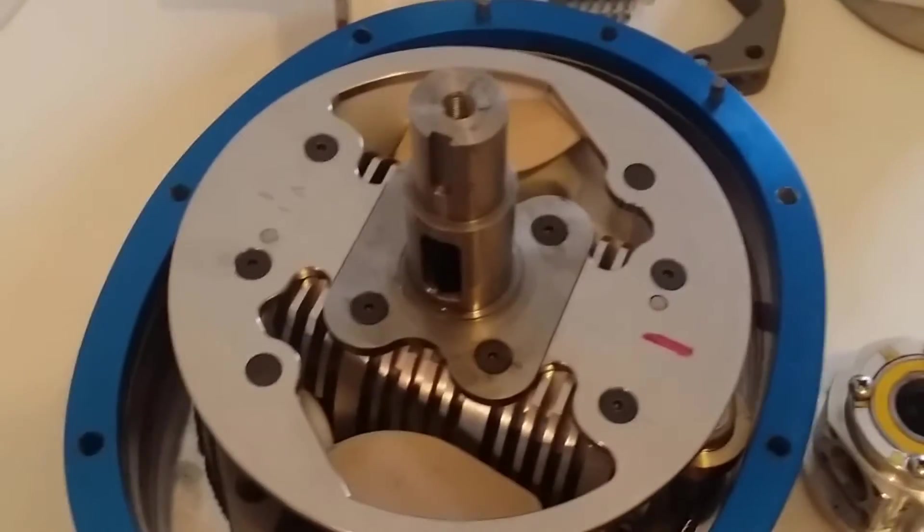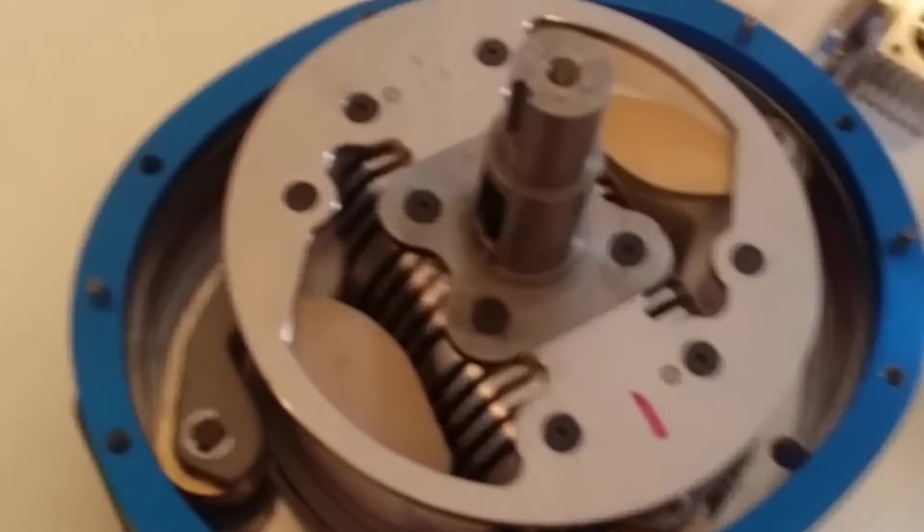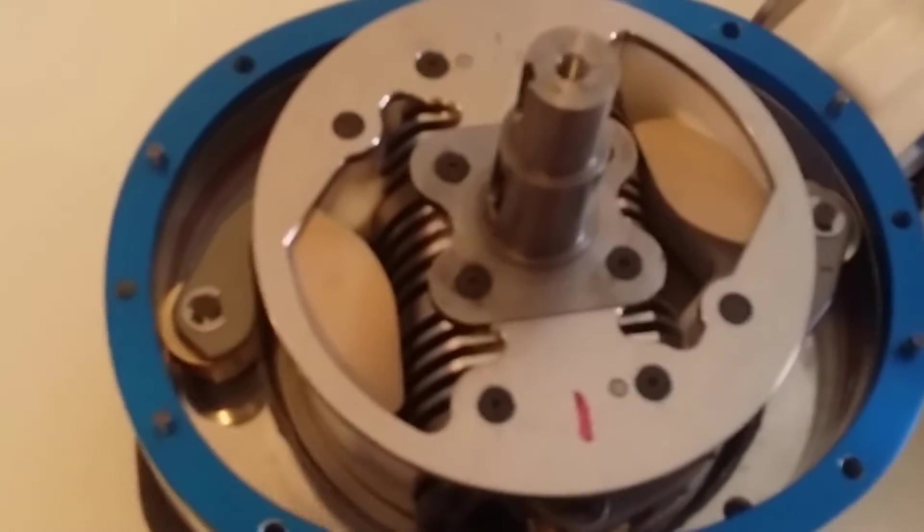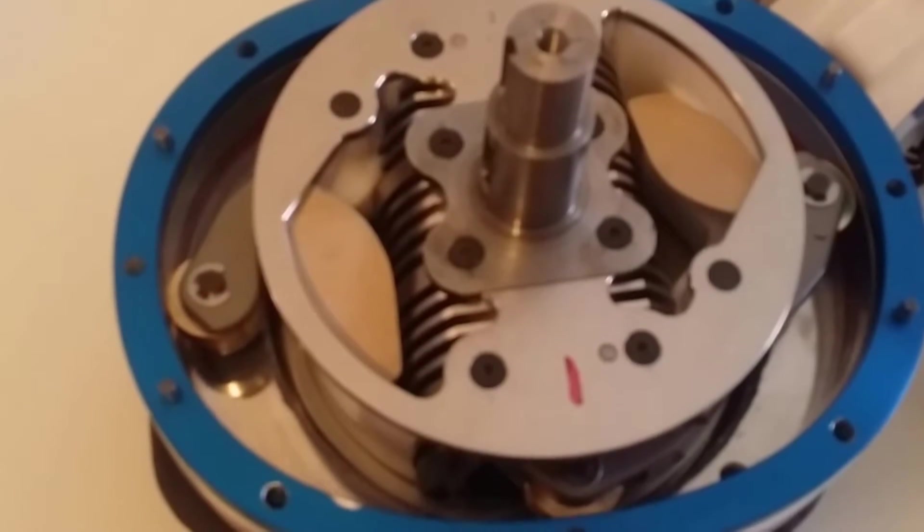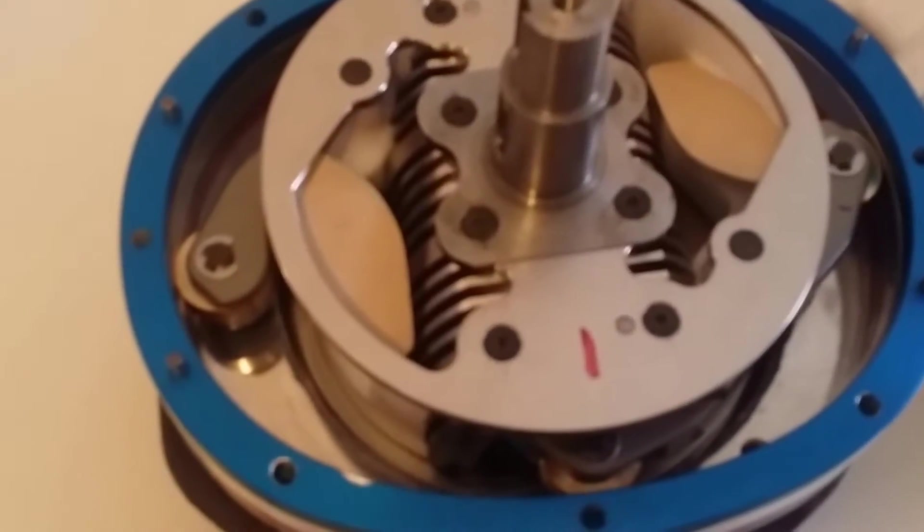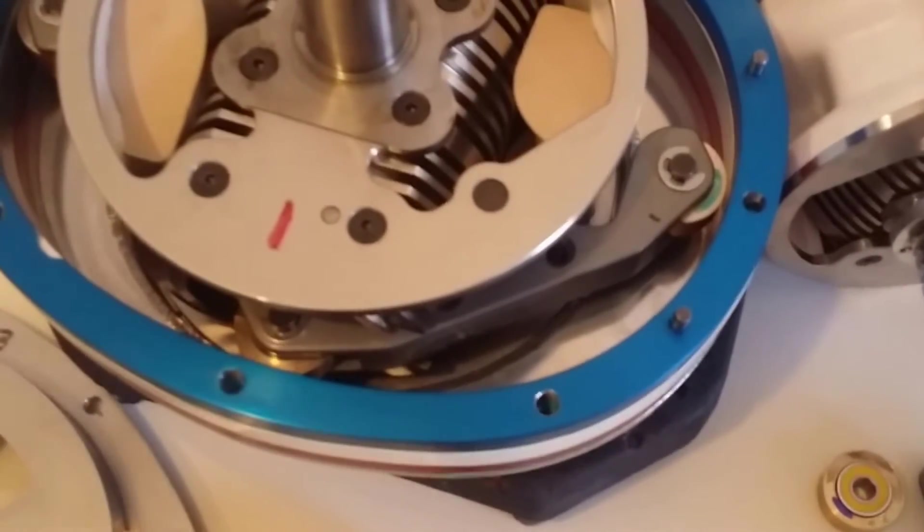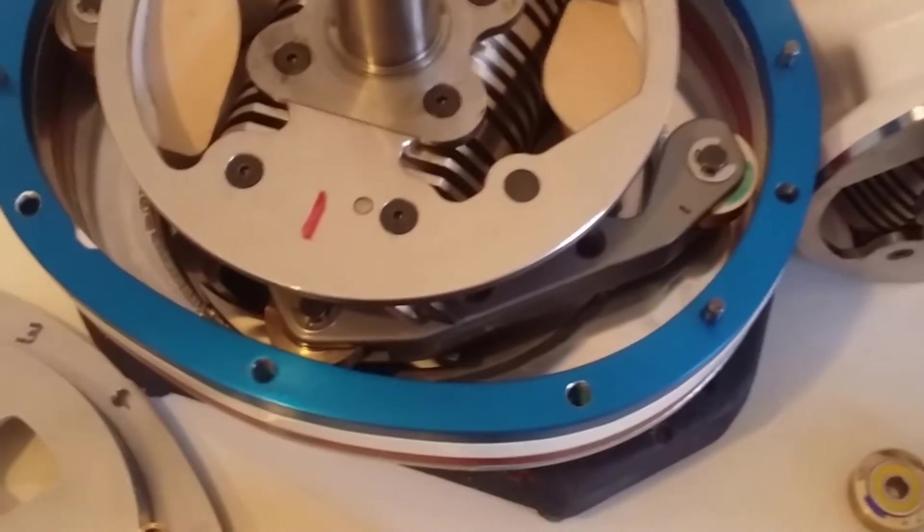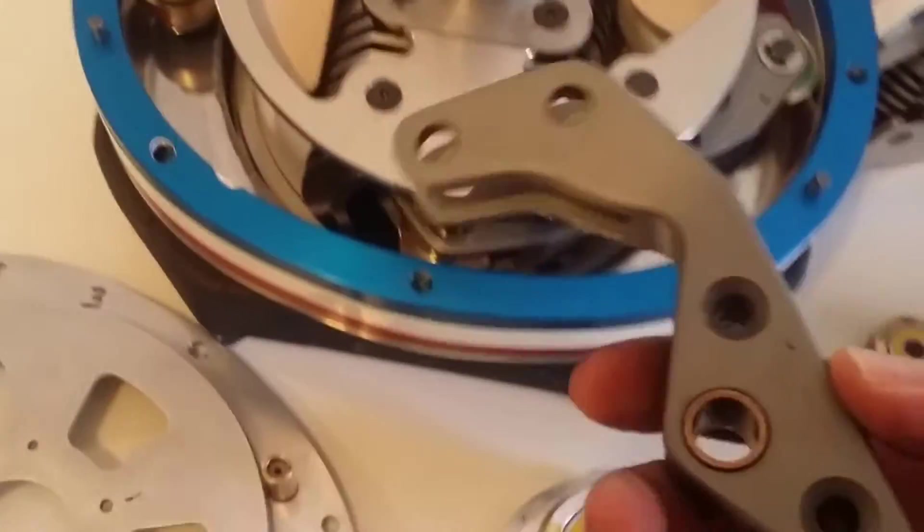Instead of having a crankshaft on each side as they did back in World War II and there's still a few engines out now that are getting a lot of popularity, there's a simpler mechanism, a lot cheaper to manufacture than a crankshaft. Each one of these would equal a crankshaft.